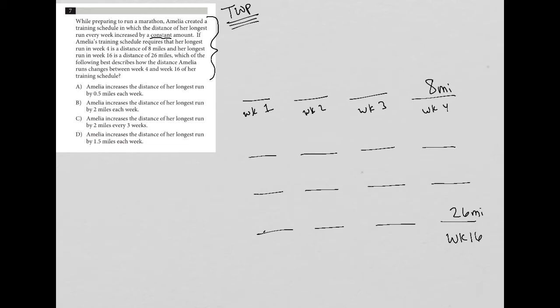Which of the following best describes how the distance Amelia runs changes between week four and week 16 of her training schedule? So that's all we know. This entire visual that I have here is the translation of what I just read. We know that it's increasing by some constant amount. So there's some plus X that this increases by every single week. And we know that at week four she's at eight miles, but by week 16 she's up to 26 miles. Because there's nothing else I can do with this information, I am going to go straight to the answer choices.